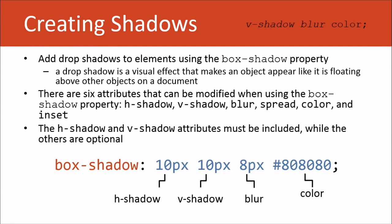You can add drop shadows to elements using the box-shadow property. A drop shadow is a visual effect that makes an object appear like it's floating — as if light is shining on the object and providing a shadow in the background. There are six different attributes for the box-shadow property: H shadow (horizontal positioning), V shadow (vertical positioning), blur level, spread, color, and inset. Today we'll go through H shadow, V shadow, blur, and color.